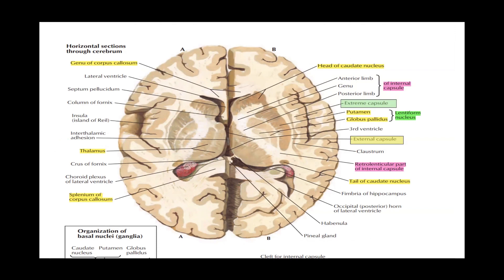Knowing the structure of the basal ganglia, its basic functions, the internal capsule lying between the basal ganglia and the thalamus with its anterior limb, genu, and posterior limb, and that it is a white matter structure transmitting ascending and descending fibers — that's enough key information about the basal ganglia. If you found this helpful, please like, subscribe, and share with friends. Thank you very much.